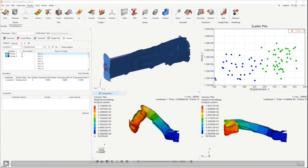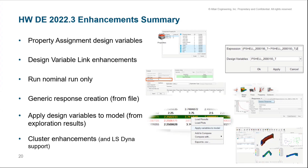In quick summary, here's a recap of the enhancements for 2022.3: Property Assignment Design Variables, where a component or element's property can be varied throughout the exploration; Enhanced Links, with more generalized links now including equations within design variable links; Run Nominal Only to validate your model before committing to a full exploration; Generic Response creation from external data sources and unsupported file or response types; and Applying Design Variables to the Model from the results.